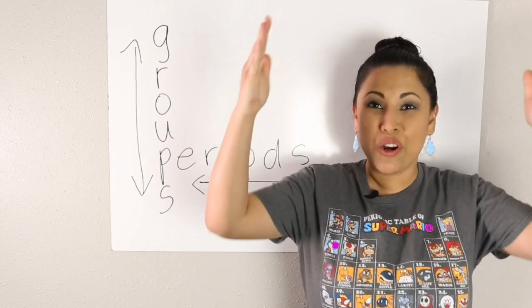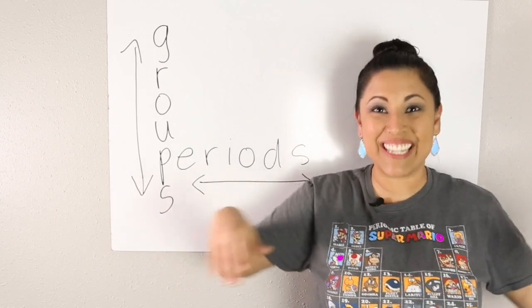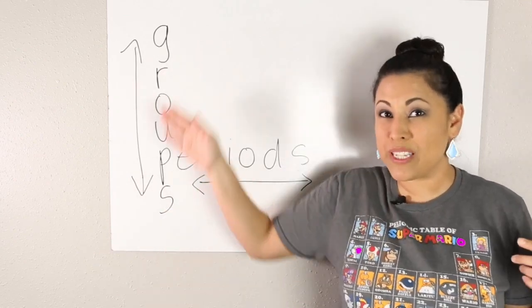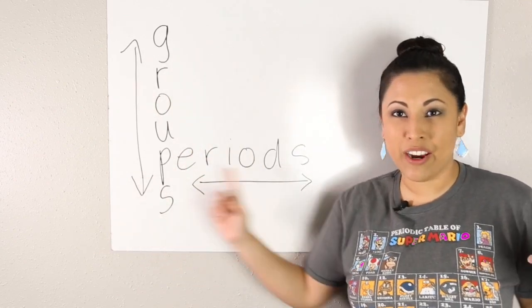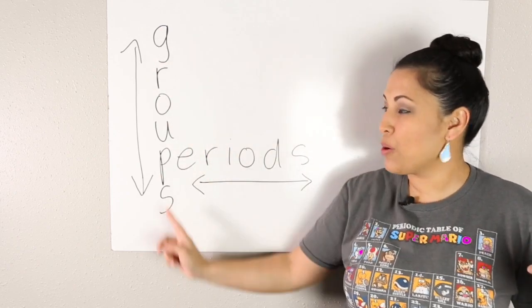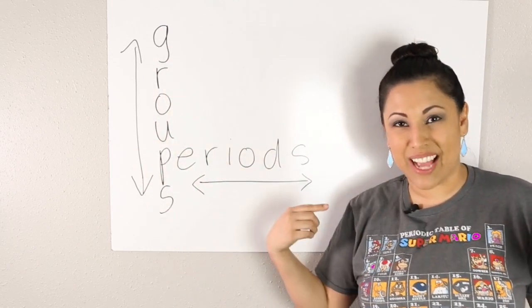Can you do that with me? Groups and periods, exactly. Our groups go up and down, and our periods go across. So our groups are vertical, and our periods are horizontal.